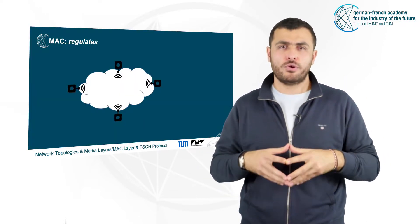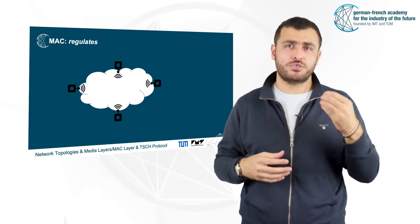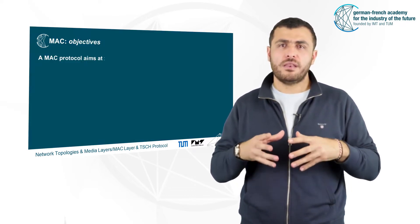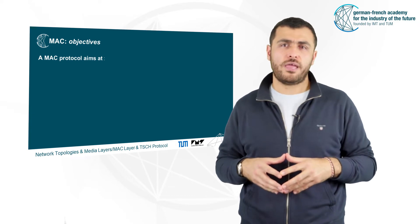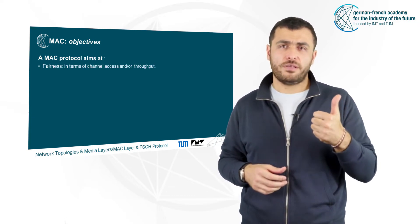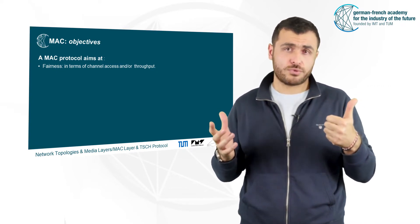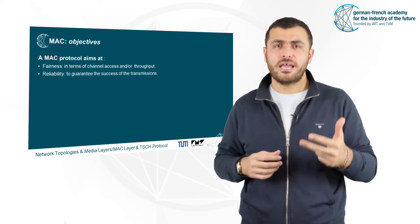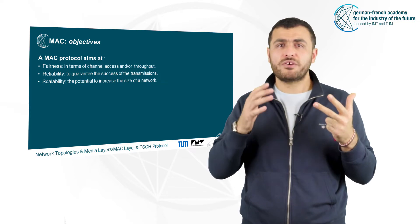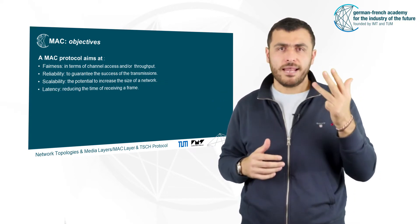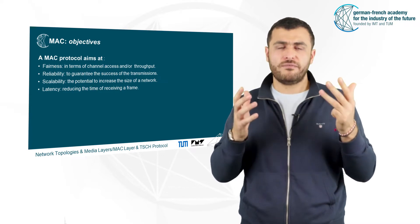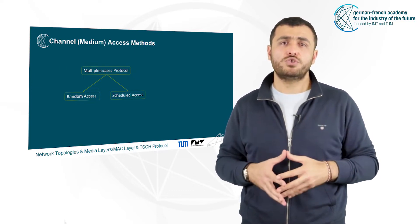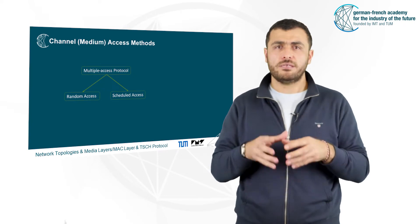In fact, the MAC includes protocols that regulate who has the right to talk, who should listen, and at what time. The solutions proposed so far aim at fairness in terms of channel access and throughput, reliability to guarantee the success of transmission, scalability to increase the size of a network, and latency, reducing the time to receive a frame. Among all solutions, we can distinguish two families: random access and scheduled access.